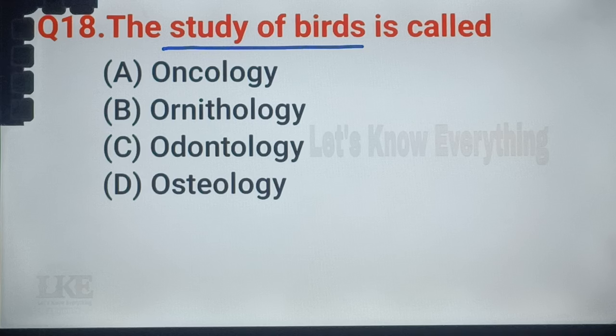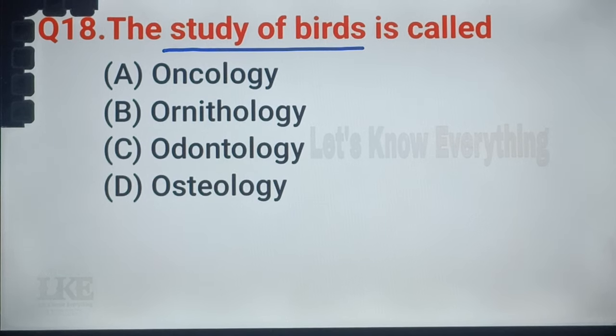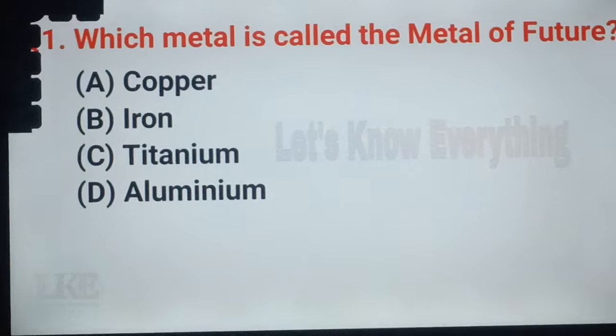Question number 19: which sugar is present in human blood? A. Fructose, B. Glucose.